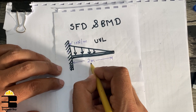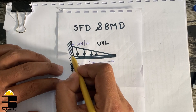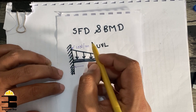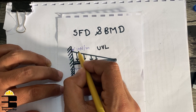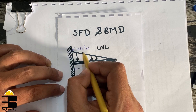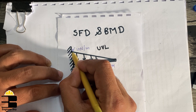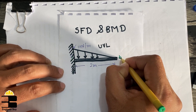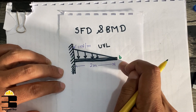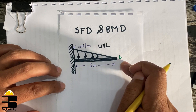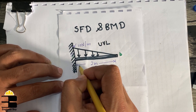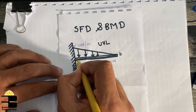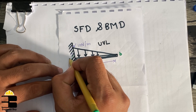The length of the beam is 2 meters and we have a fixed support here. The load is 10 Newton per meter at the end. As you can see we have two points: the free end and the fixed end, and let's call the fixed end point A.